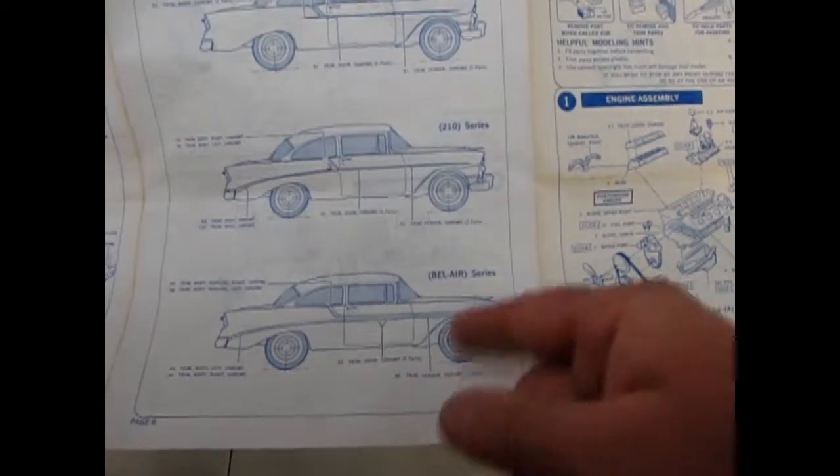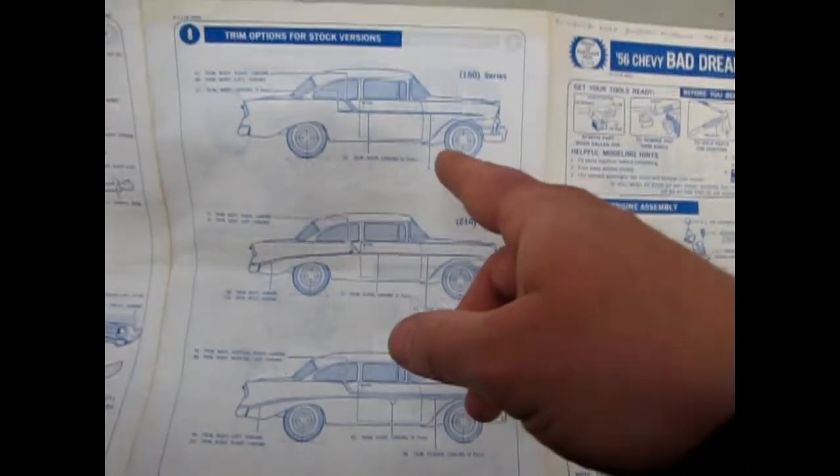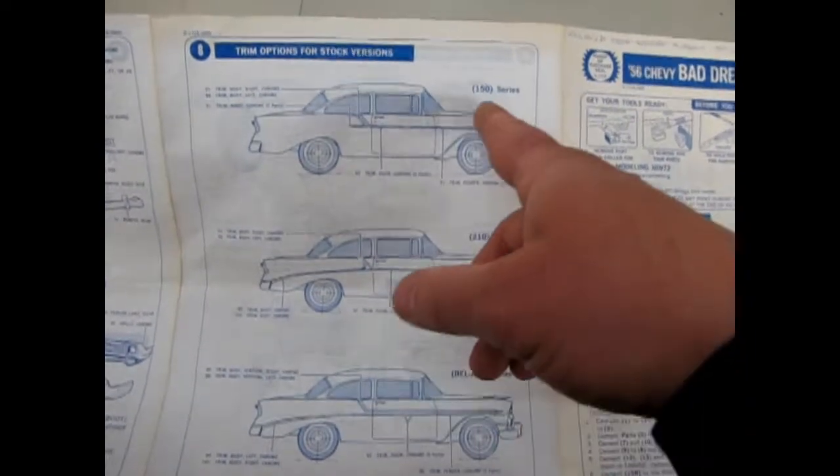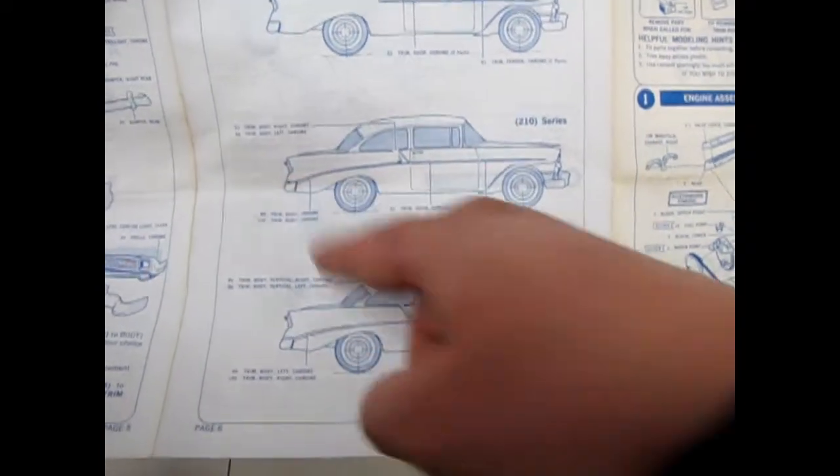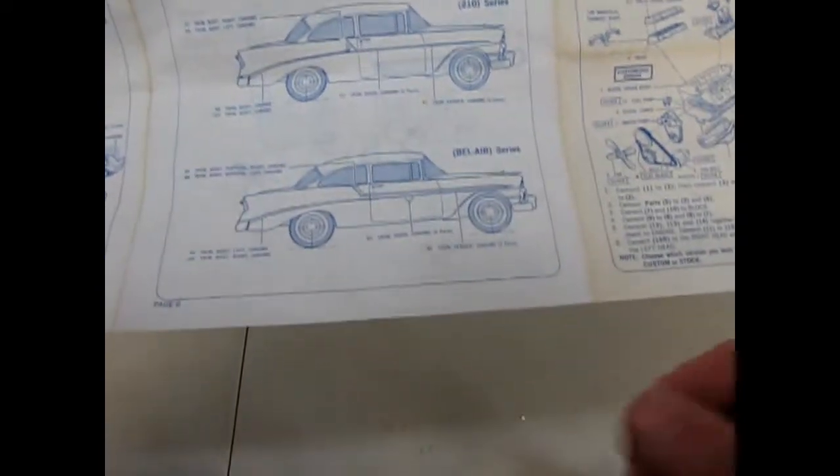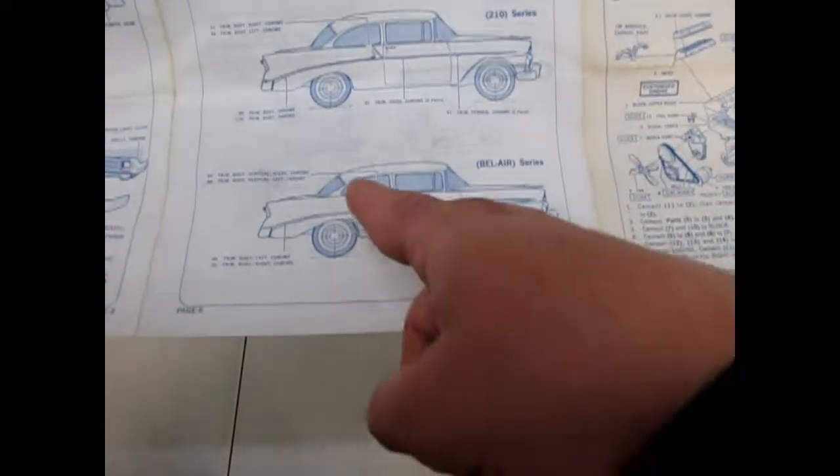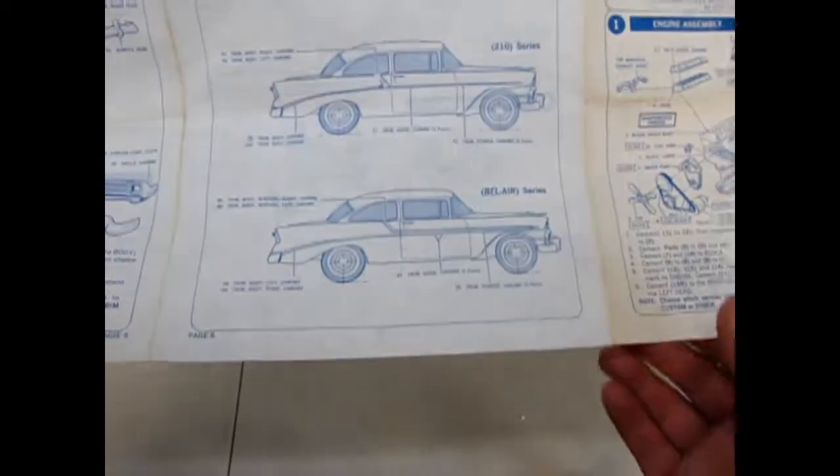And you've got your choice of the stock tail light or the custom filler piece. And then front splash pan and optional grills. Yeah, it must be stock or custom, more or less. And then they give you the specifications of the trim. So you could build this as a 150 series with the trim that way, the 210 where the trim continued down to the side, much like the Del Rey model I reviewed earlier, or the Bel Air where it splits and comes back. So it is kind of a neat kit in that regard.